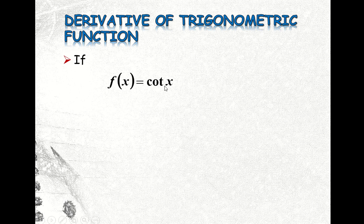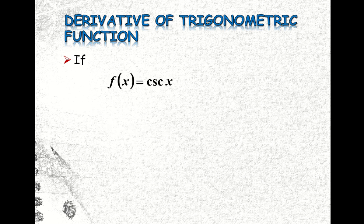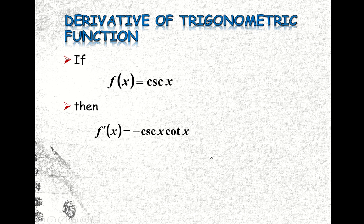If f(x) = sec(x), then the derivative of sec(x), or f'(x), is equal to sec(x) times tan(x). And if f(x) = csc(x), then the derivative of csc(x), or f'(x), is equal to negative csc(x) times cot(x).